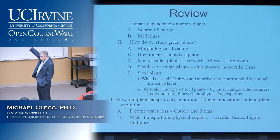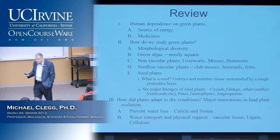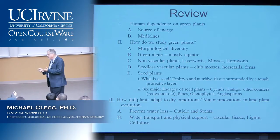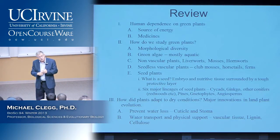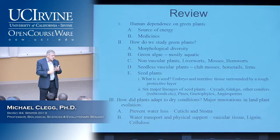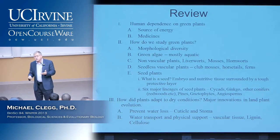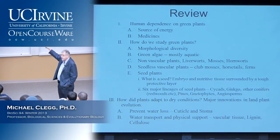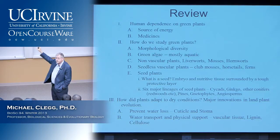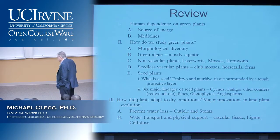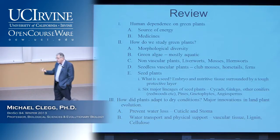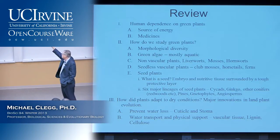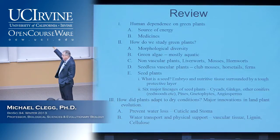We talked about different groupings based on major morphological features — basically whether they have vascular tissue and whether they produce seeds or not. Vascular tissue is very important because it was essential to colonize the land, particularly drier parts of the land that are not like swamps. Vascular tissue was an essential innovation in the colonization of the terrestrial environment.